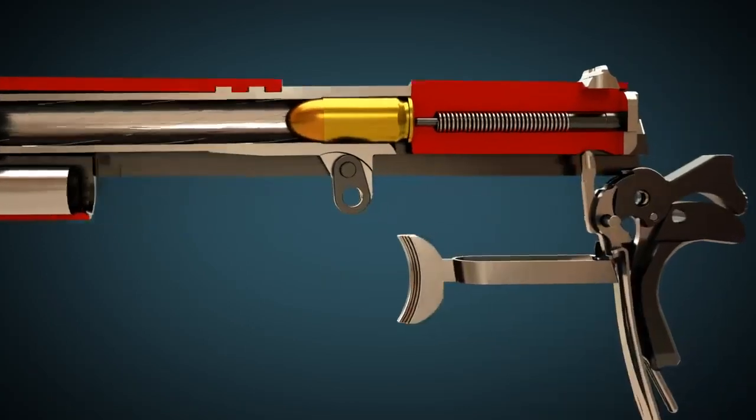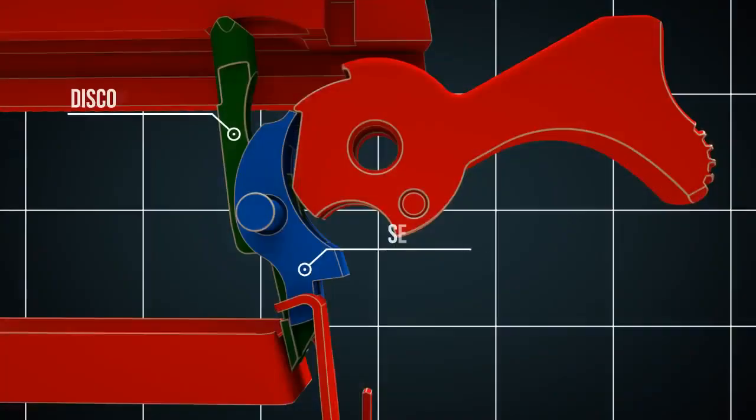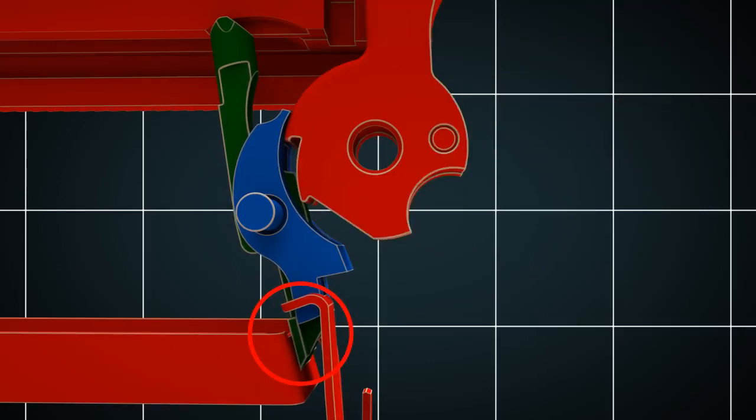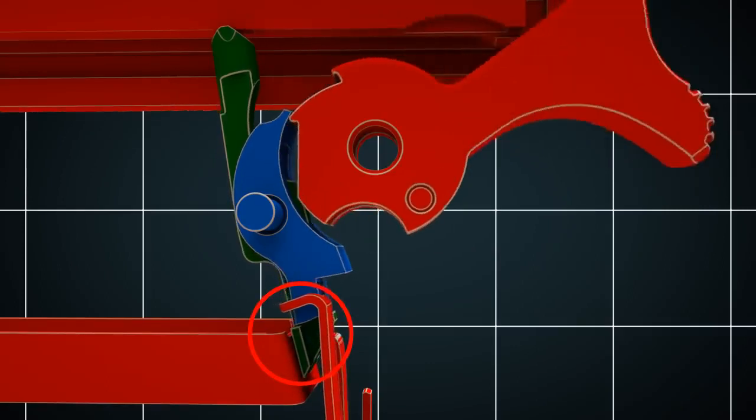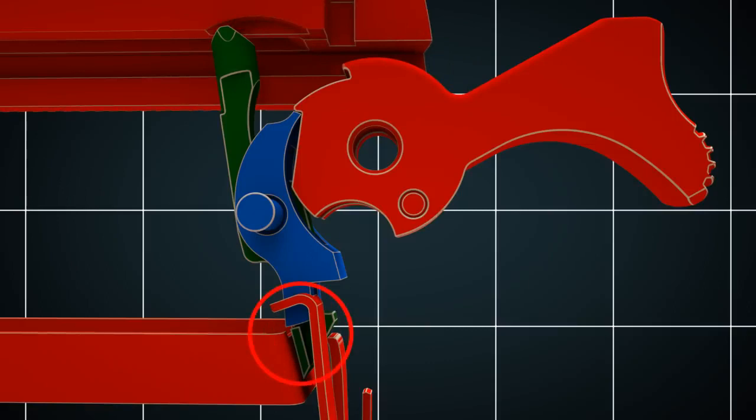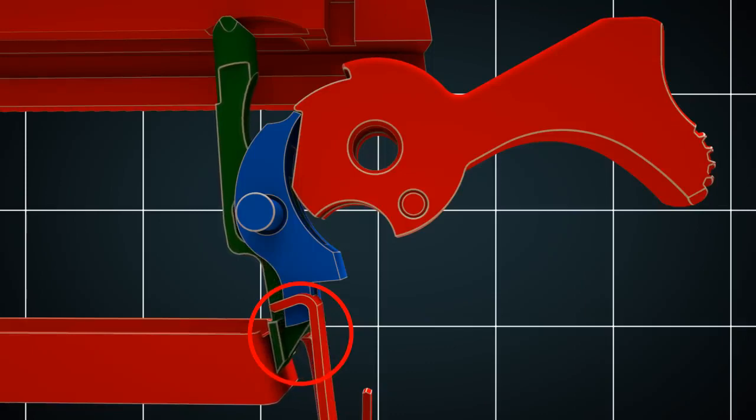As soon as the trigger is released, the gun can be fired again. Let us take another close look at this. The hammer hits the firing pin and ignites the propellant. This causes the slide to move backwards and pushes the disconnector downwards so that it releases the sear, thus the sear can engage the hammer. When the trigger is released, the disconnector slides between the trigger and the sear. Now the gun can be fired again.